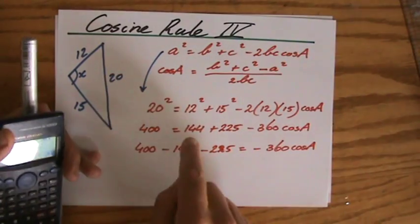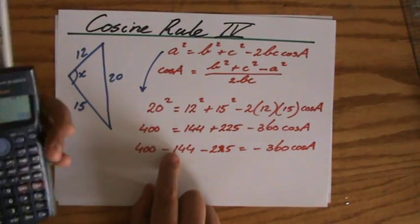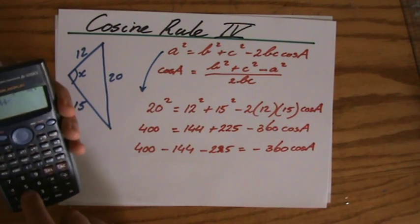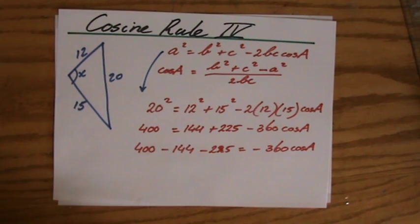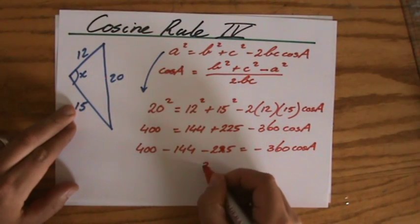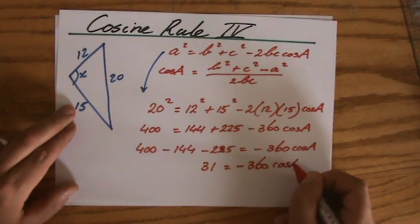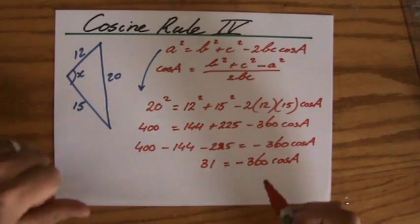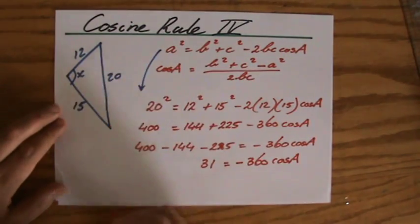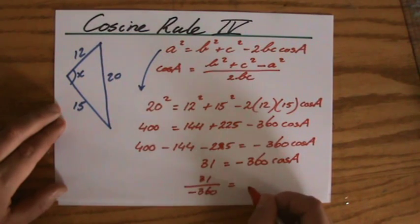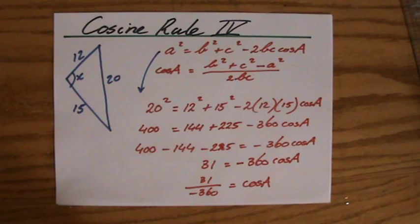Or, as some of you say, if you move it to the other side of the equal sign, the sign changes. Okay? 400, take away 144, take away 225. I'm not sure why you're on a calculator, actually. But, okay. It is 31 equals minus 360 times the cosine of a. Then, I divide both sides by minus 360. So, 31 divided by minus 360. That is the cosine of a. Do we agree with that?